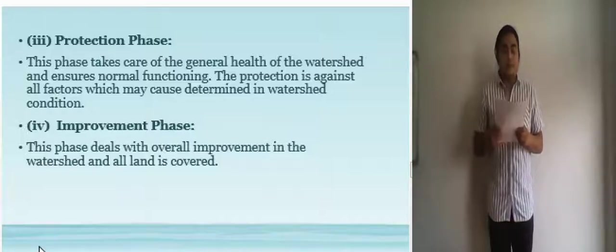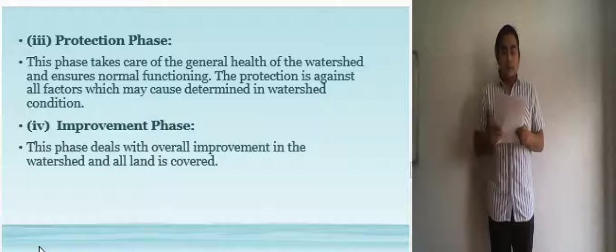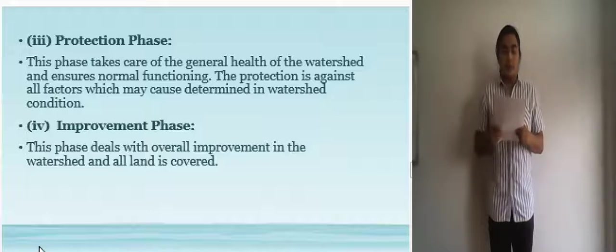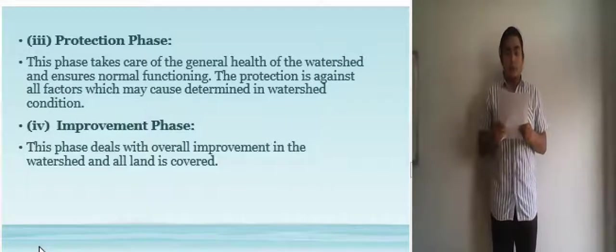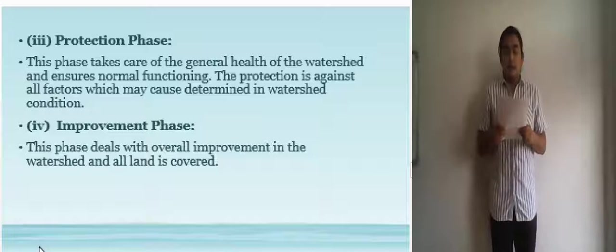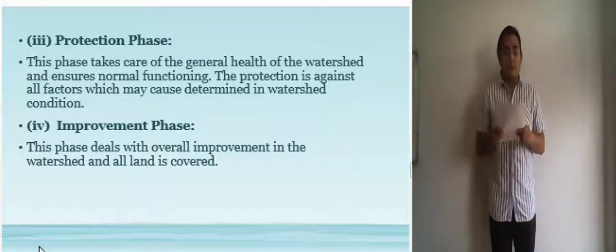And the third phase is the protection phase. This phase takes care of the general health of the watershed and ensures normal functioning. The protection is against all factors which may cause deterioration in the watershed condition. Protection against natural calamities that may occur, bacteria, everything that may hinder the flow and current state of the watershed.